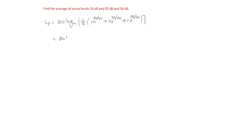Which is equal to 20 log base 10, 1 by 3 of 10 power 2.5 plus 10 power 2.75 plus 10 power 2.9, which is equal to 20 into log of 1 by 3 into bracket open 10 power 2.5 plus 10 power 2.75 plus 10 power 2.9, equal to 54.93 decibels.